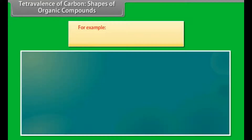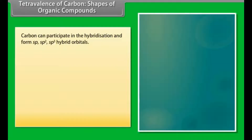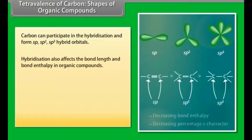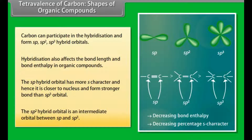For example, methane, ethene, ethyne. Carbon can participate in hybridization and form sp, sp2, sp3 hybrid orbitals. Hybridization also affects the bond length and bond enthalpy in organic compounds. The sp hybrid orbital has more s character and hence it is closer to the nucleus and forms a stronger bond than sp3 orbital. The sp2 hybrid orbital is an intermediate orbital between sp and sp3.